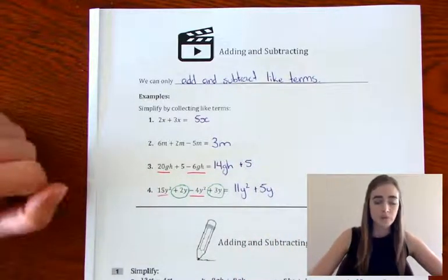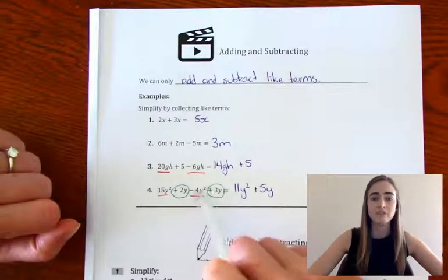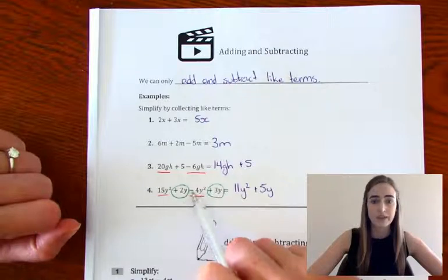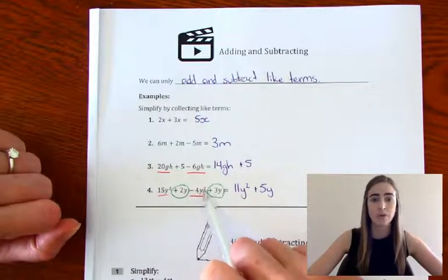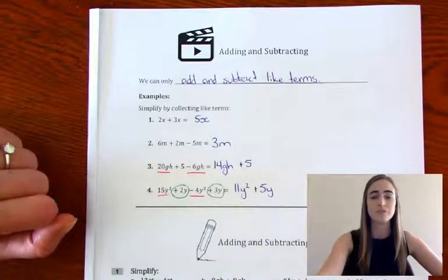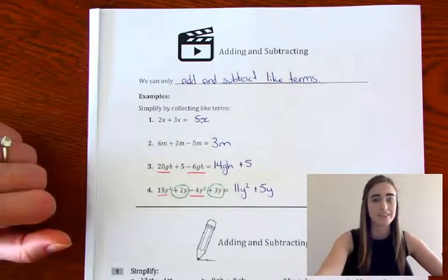So it's really important that the pluses and minuses that are in front of the term stay with it. So that negative stayed with the 4y squared. Plus stayed with the 3y. So that's a few examples of adding and subtracting algebraic expressions.